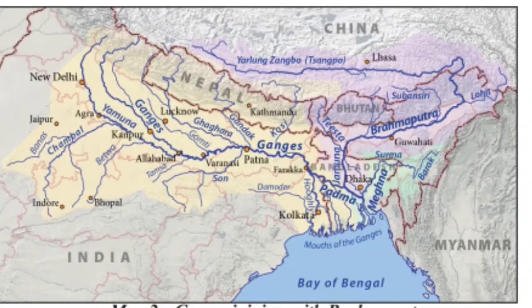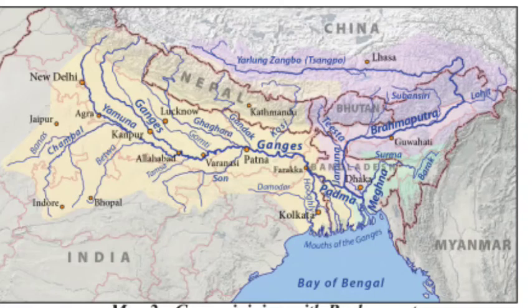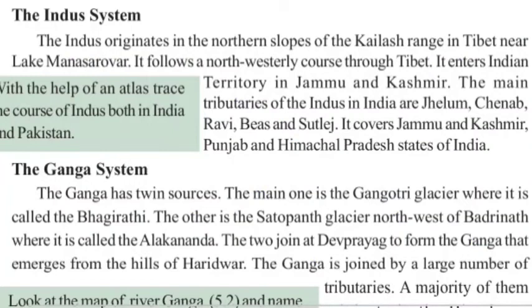Next is the Ganga river system. The Ganga has twin sources: the main one is the Gangotri glacier, also called Bhagirathi. The other is the Satopanth glacier, north-west of Badrinath, where it is called Alaknanda. These two rivers — Bhagirathi and Alaknanda — join at Devprayag to form the Ganga river, which then emerges from the hills at Haridwar.